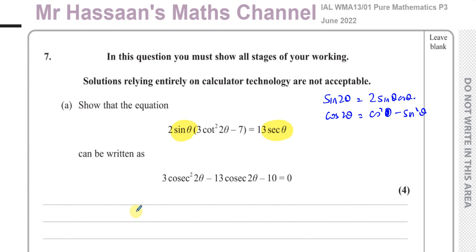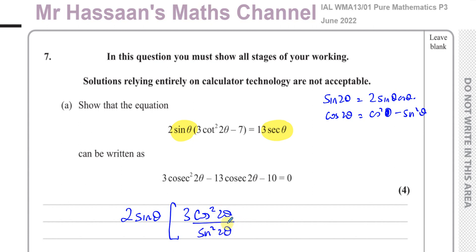I'll keep 2 sinθ for now, and rewrite the reciprocal functions. cot θ = cosθ/sinθ, so cot²2θ = cos²2θ/sin²2θ. And secant θ: since the reciprocal of sec is cos, the right-hand side becomes 3/cosθ — wait, it's 13/cosθ.